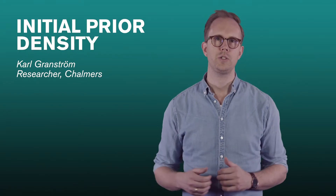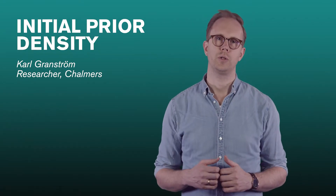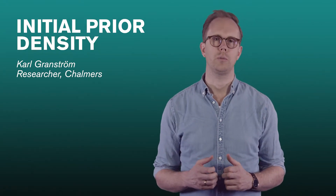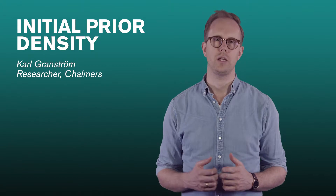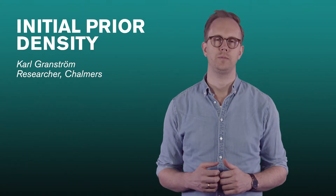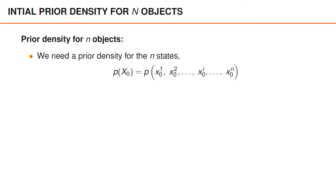In this short video we're going to see how we can model the initial prior density in n-object tracking. What we need is a prior density for the n objects — a prior at time zero for the object states x1, x2, and all the way to xn.